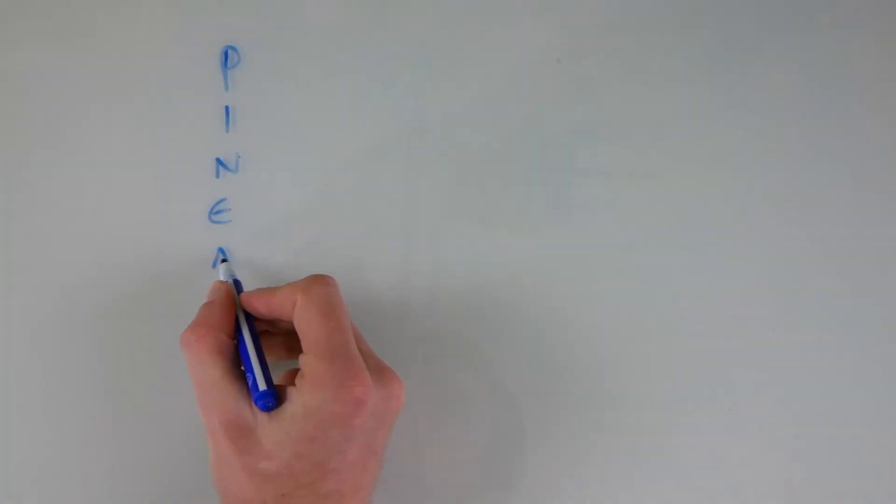For example, we could use the word 'pineapple.' Write pineapple vertically on the board. I like to do this before class so students, when they come in, can see it, and if they've done the activity before, they know exactly what to do. They don't even need me to prompt them — they can just walk in and start doing it. In this case they'll write nine words, one for each letter of pineapple. They can do this on some scrap paper, a mini whiteboard, or in their exercise book.